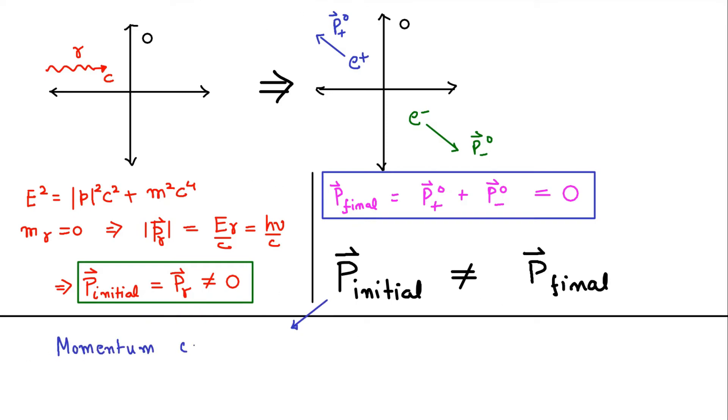We therefore conclude that the process in which an isolated photon undergoes pair production is not allowed, because there is no way for such a process to occur such that the net momentum is conserved.